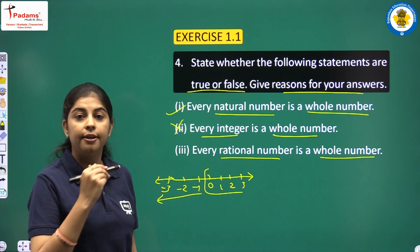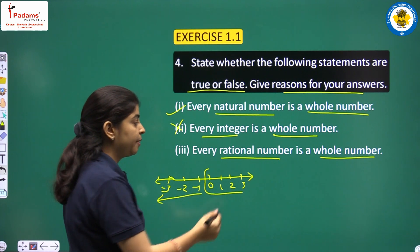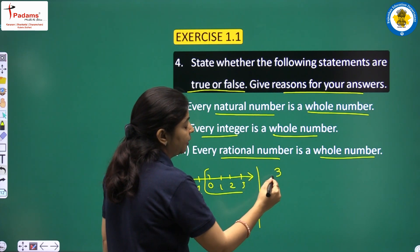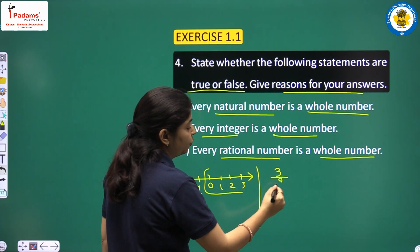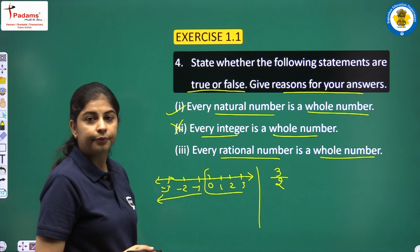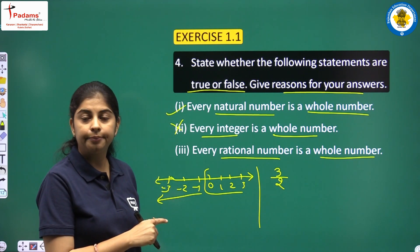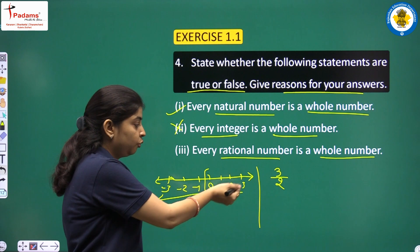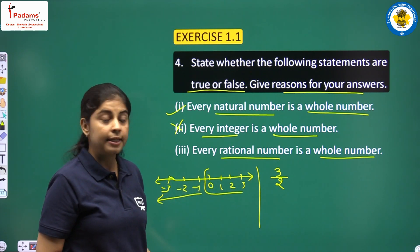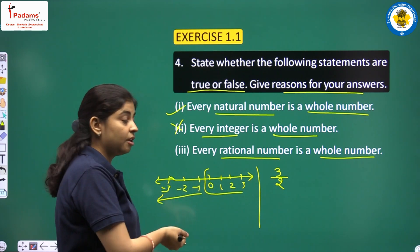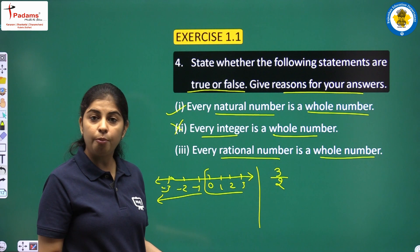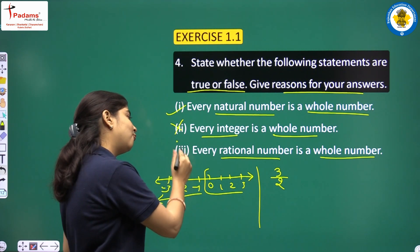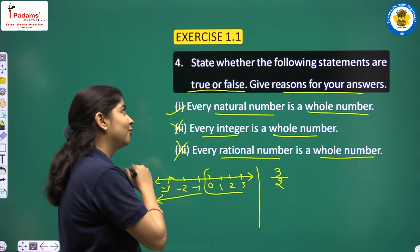Take a rational number example: 3/2. Is it a whole number? Whole numbers are 0, 1, 2, 3, 4 — they are not in fraction form. But rational numbers are in fraction form. So this statement is also false.